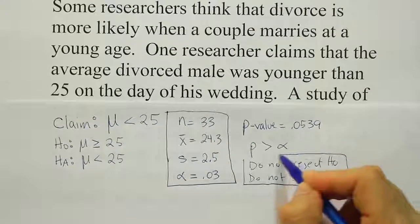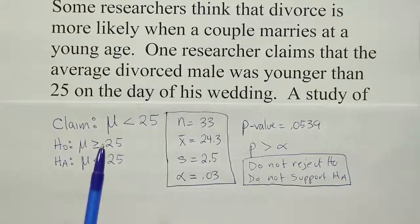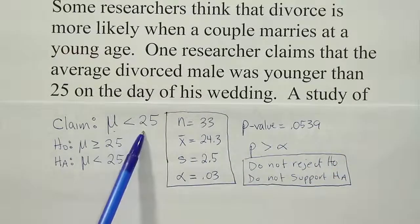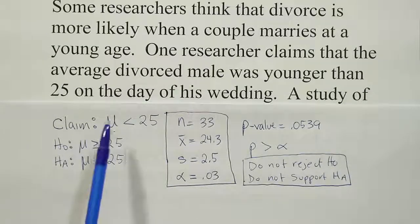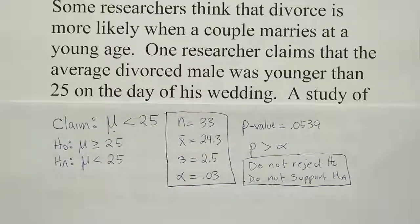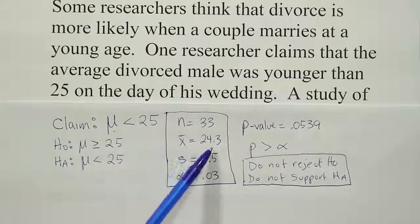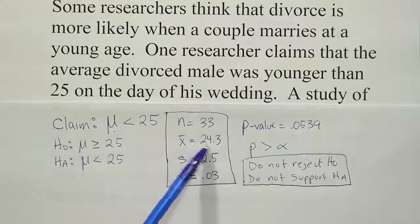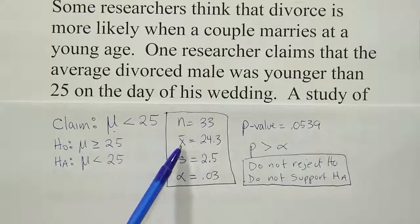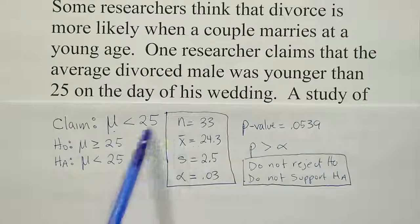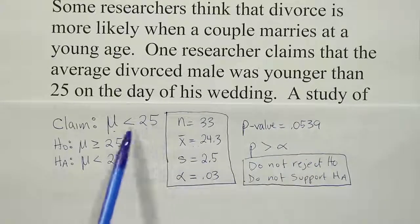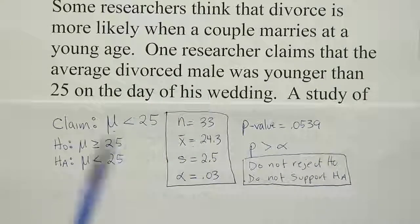And then from there, you can figure out the rest of it. Since our claim is HA, we're going to say we do not support the claim. So the sample data does not support the claim that the average age is less than 25. Even though our x-bar was less than 25, this is close enough to 25 that perhaps it's actually equals 25 and not less than 25, or perhaps it could even be more than 25. So basically, the data is not strong enough to support the claim.